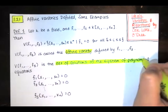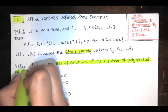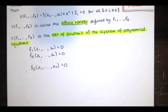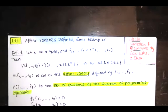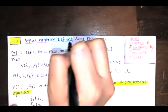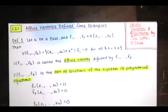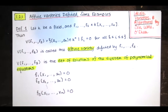An affine variety is a solution set. When you think of an affine variety, it's helpful to have that concrete picture in your mind of a solution set of a system of polynomial equations. For the rest of this video, we'll look at many of the examples I just mentioned, and in the next video we'll talk about dimensionality, applications, and some important questions related to varieties.